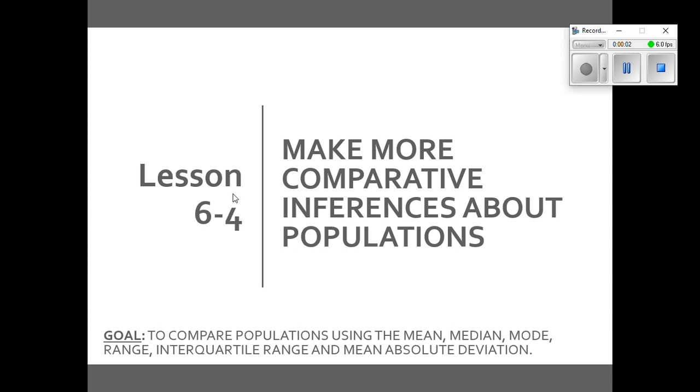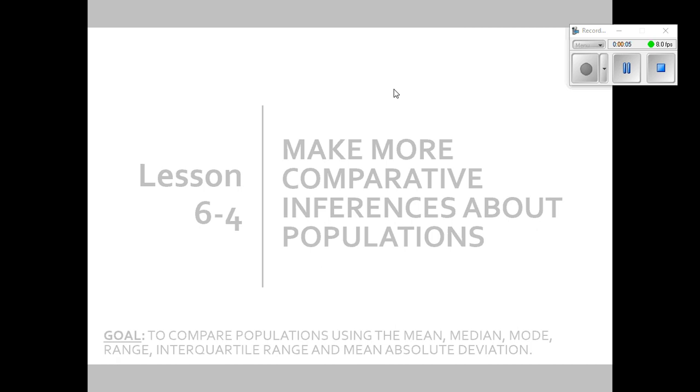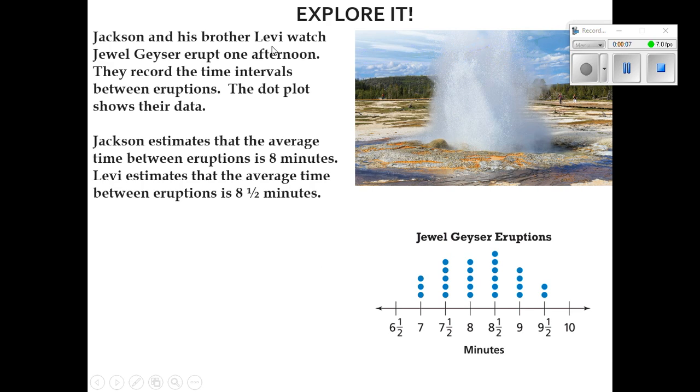Hi, everybody. Tonight we're going to be doing Lesson 6-4, make more comparative inferences about the population. We're going to start with the Explorer, where it says Jackson and his brother Levi watch Jewel Geyser erupt one afternoon. They record their time intervals between eruptions. The dot plot shows their data.